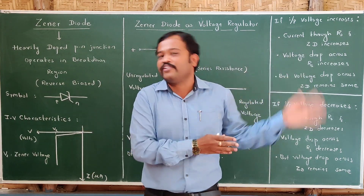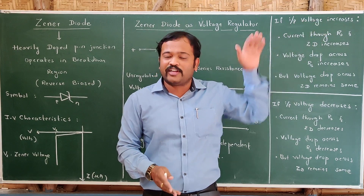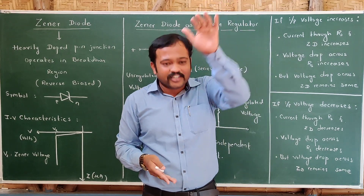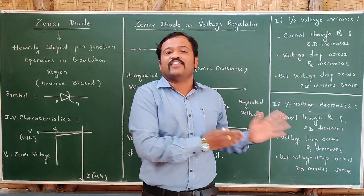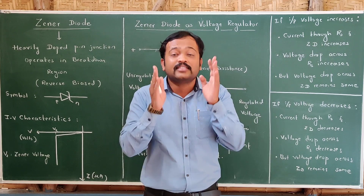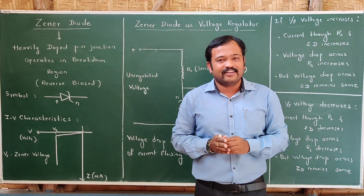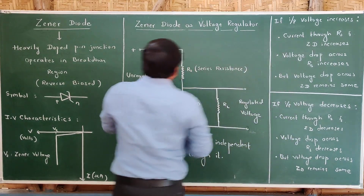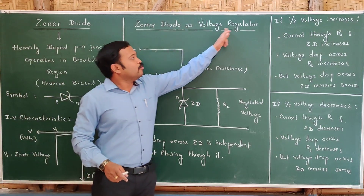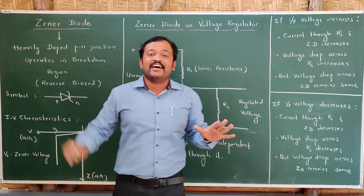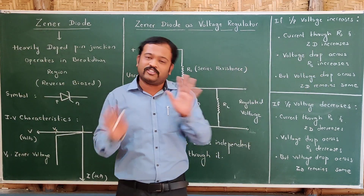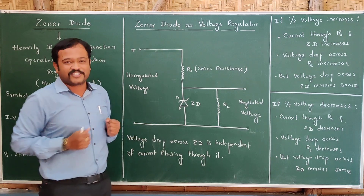There will be a computer, a TV, a refrigerator — we do not connect them directly to the plug because we know they may get damaged. We first connect to the stabilizer and the stabilizer to the plug. Even though there is variation in the voltage, the stabilizer will get damaged and not the device of high cost. The same work the Zener diode does. A voltage regulator is a device which converts unregulated voltage to regulated voltage — variation voltage to constant voltage.